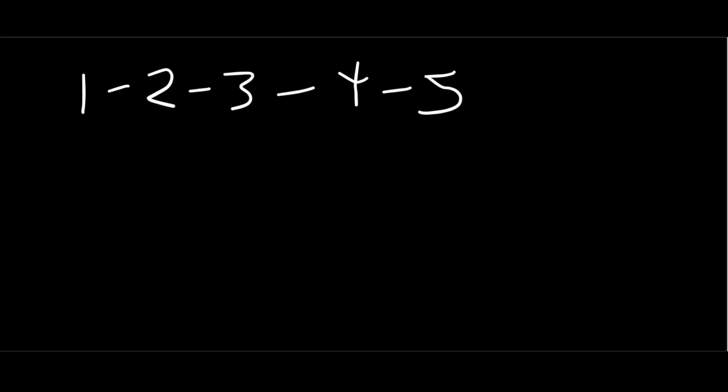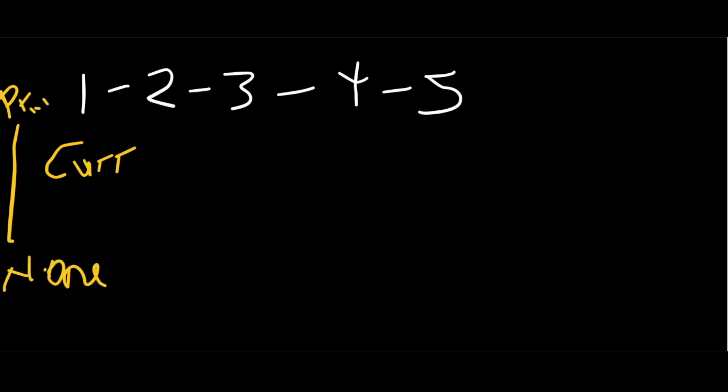We'll be solving this iteratively and recursively. How do we go about changing the direction of the pointers? We change the direction of the pointers using a technique called two pointers. When solving a linked list problem, we traverse using a current pointer — this is where our current node is. We also need to have a previous pointer. Right now our previous pointer is pointing to none because we have nothing; we're just starting our traversal.